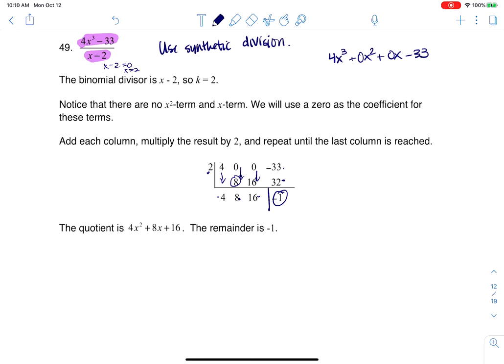My quotient, if I look at it, if I start here, this is going to be 4x squared plus 8x plus 16, and I start one degree down. I started with a cubed initially, so I need to go one degree down in my quotient. And there you go.